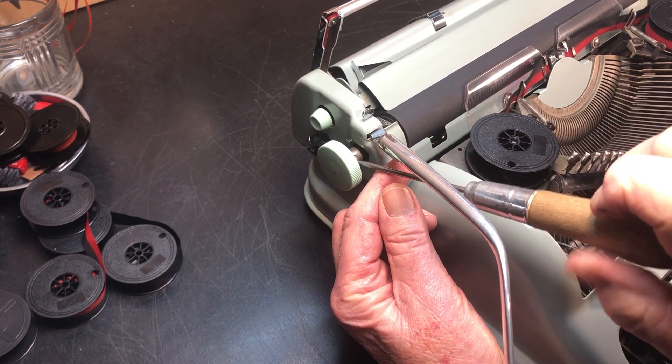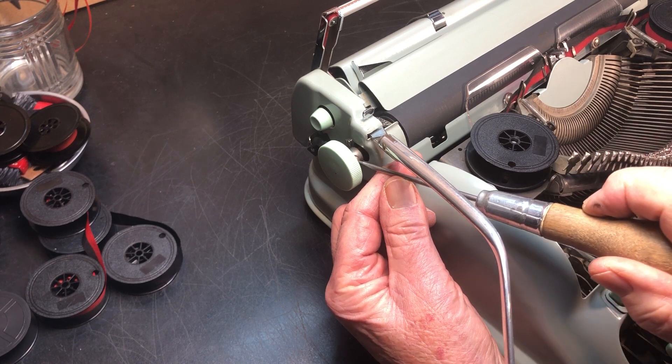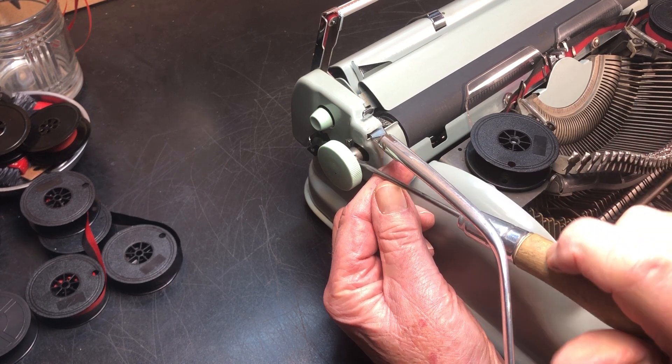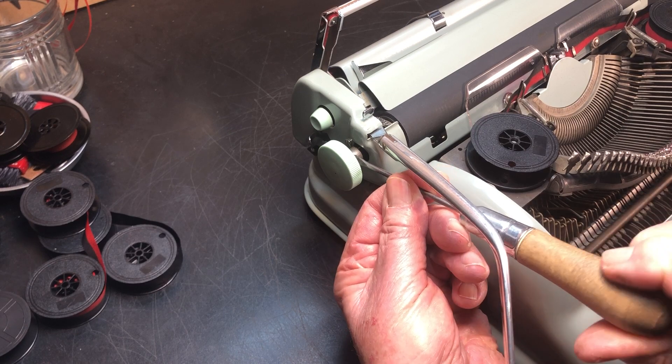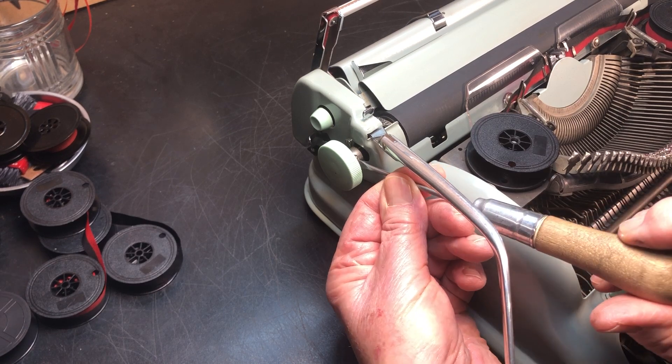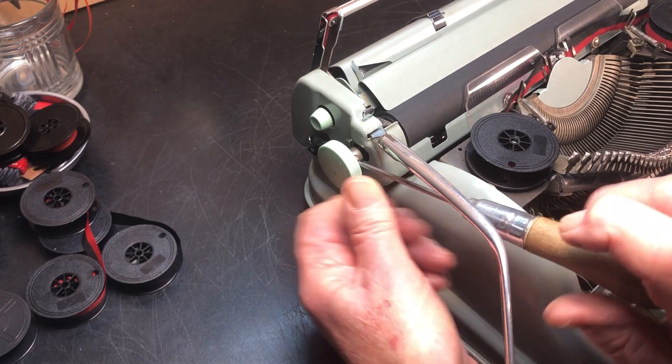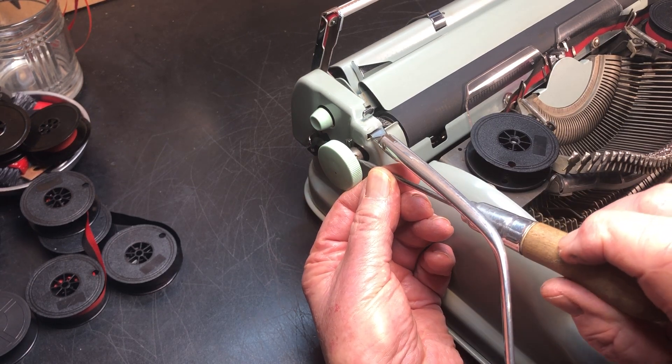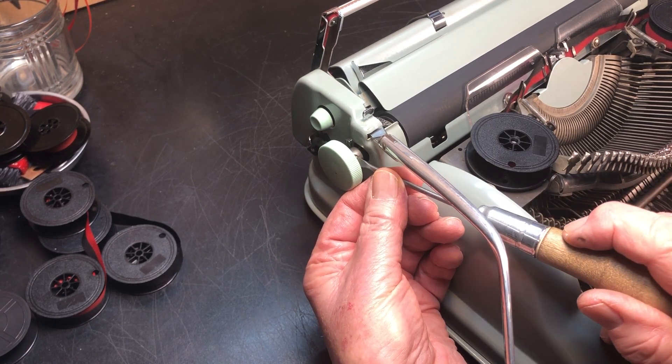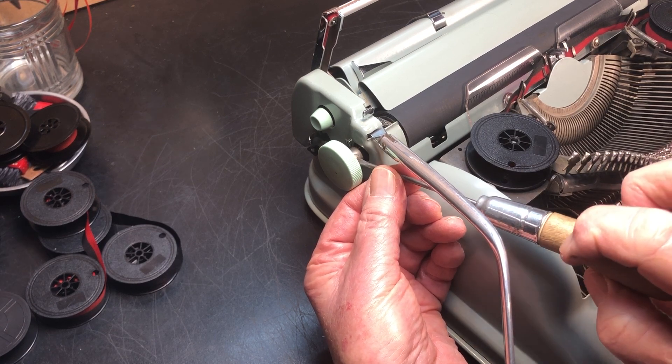It's a little bit tricky on the Hermes, the variable. And the way it works, I have to get the screw out of here first. Trying to do this with the camera running is a little difficult, but we'll see if we can do it.